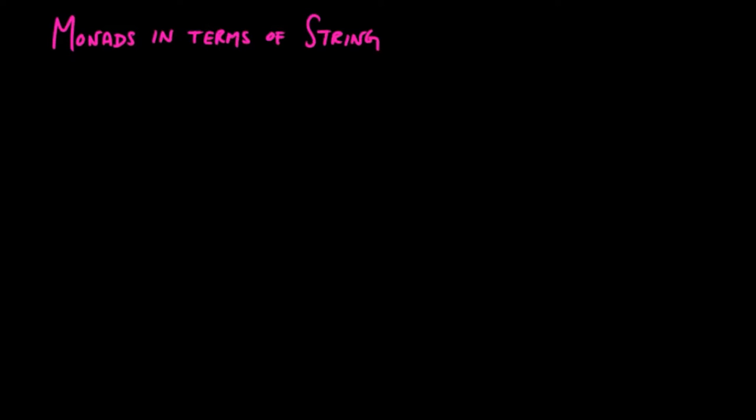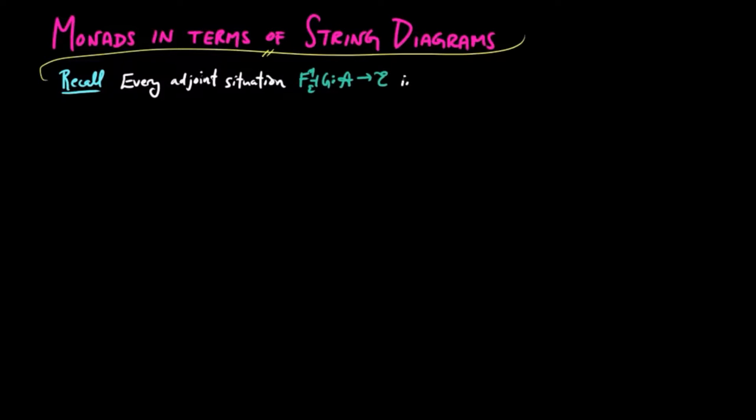In this video, we give a definition of monads and adjoint situations in terms of string diagrams and prove the result that every adjoint situation induces a monad by using string diagrams.